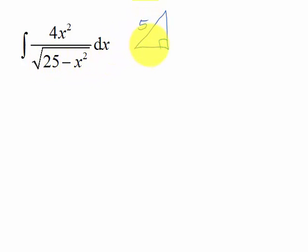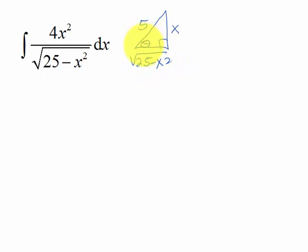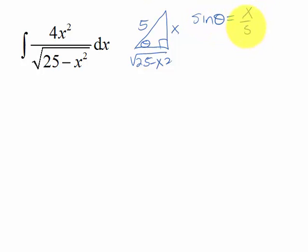The hypotenuse is going to be 5, so when squared I'll get the 25. Then this side will be x, so that the remaining side is the square root of 25 minus x squared. With theta here, I see opposite over hypotenuse, so sine theta equals x over 5, meaning my substitution is x equals 5 sine theta.